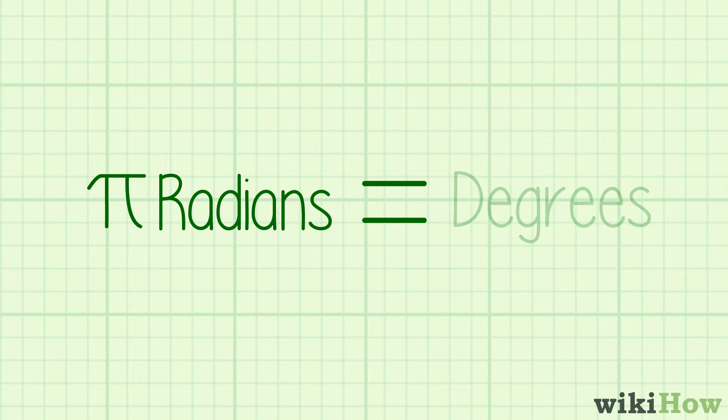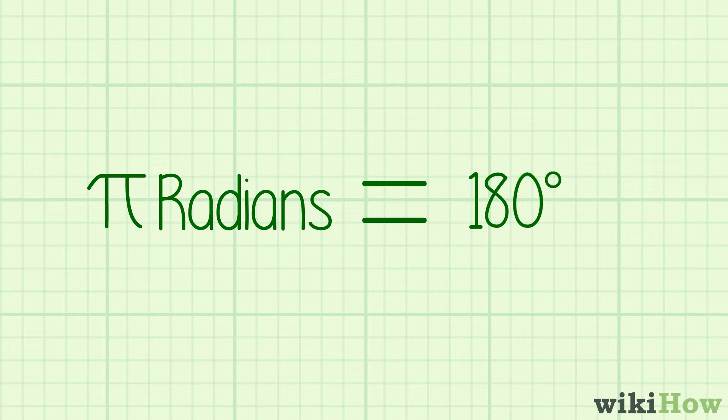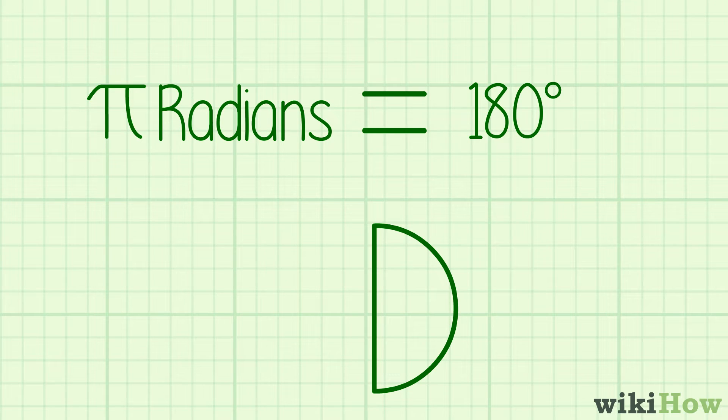First, remember that pi radians is equal to 180 degrees, or half the number of degrees in a circle.